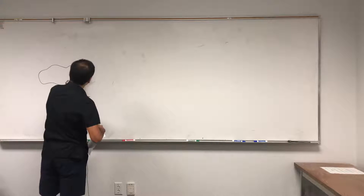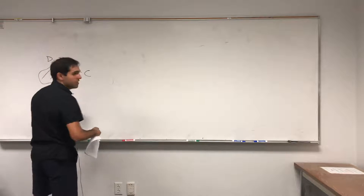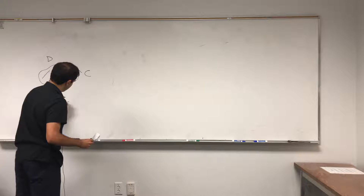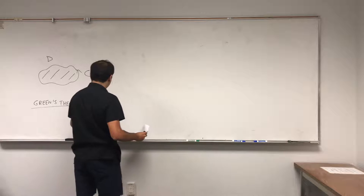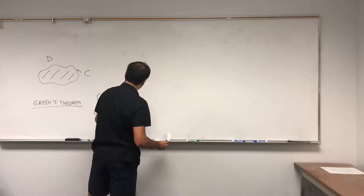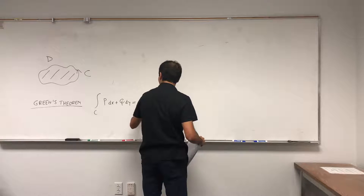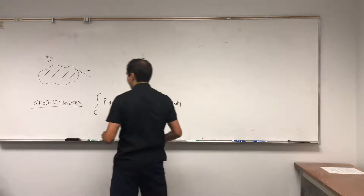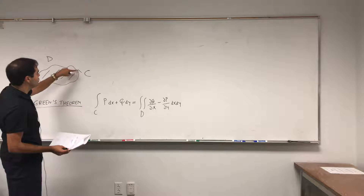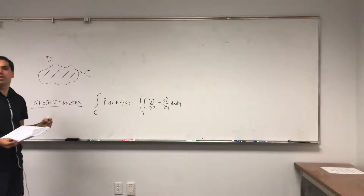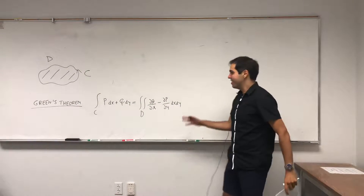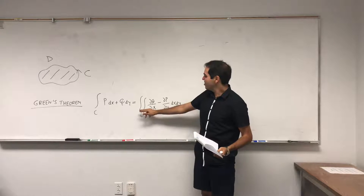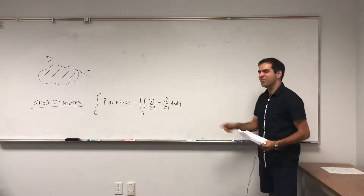Suppose you have a curve C that encloses a region D, and again, this is all in two dimensions. Then Green's Theorem says: if you integrate the vector field P dx plus Q dy, that gives you the double integral over D of dQ/dx minus dP/dy, dx dy. Which is amazing because it turns a line integral over a curve into a double integral over the region inside the curve.